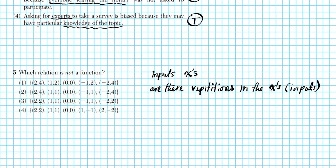Let's go through the options and look for repetitions in the x-values. For option 1: we have x-values 2, 1, negative 1, negative 2 — no repetitions. This is a function. It doesn't matter if the outputs repeat; all you care about is the inputs. Option 2: x-values 2, 1, 0, negative 1, negative 2 — no repetitions. This is a function. Option 3: x-values 2, 1, 0, negative 1, negative 2 — no repetitions. That is also a function.